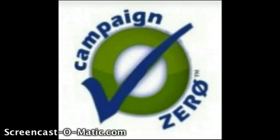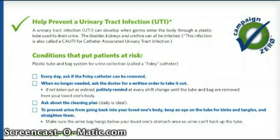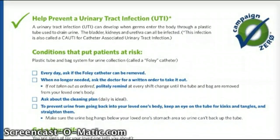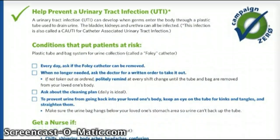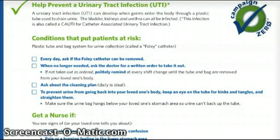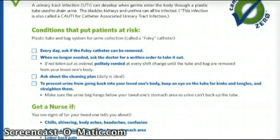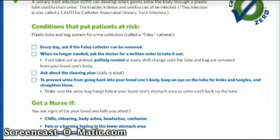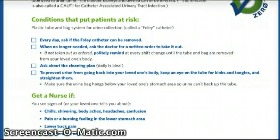Campaign Zero is a public health campaign that helps inform people about hospital-acquired infections. They provide a checklist on actions to take in order to prevent nosocomial UTI. Some advice that this checklist includes: every day ask if the Foley catheter can be removed; when no longer needed, ask the doctor for a written order to take it out. Ask about the cleaning plan. To prevent urine from going back into your loved one's body, keep an eye on the tube for kinks and tangles and straighten them. Get a nurse if you see signs of chills, shivering, body aches, headaches, confusion, pain or a burning feeling in the lower stomach area, lower back pain, or if there is blood in the urine bag.